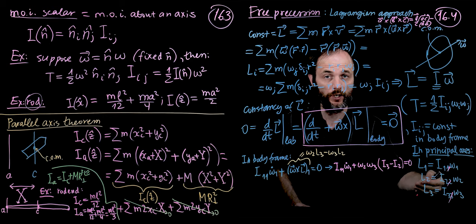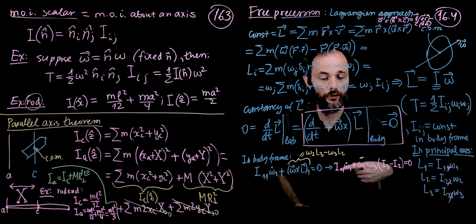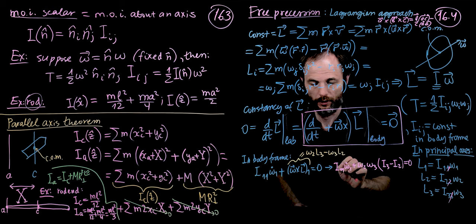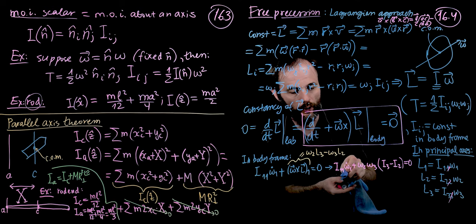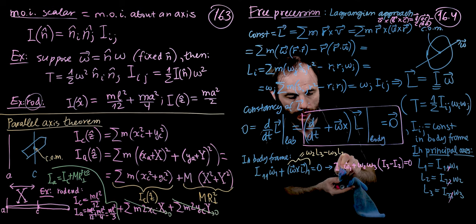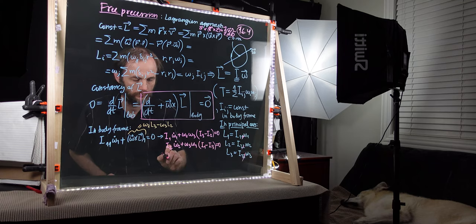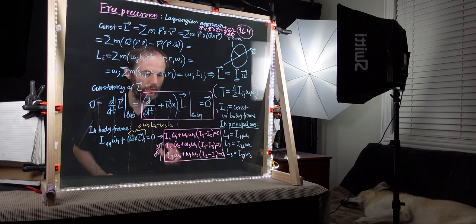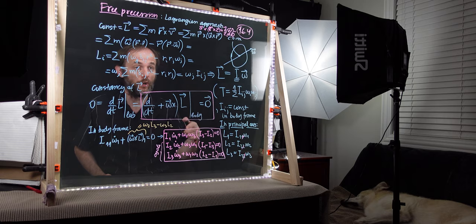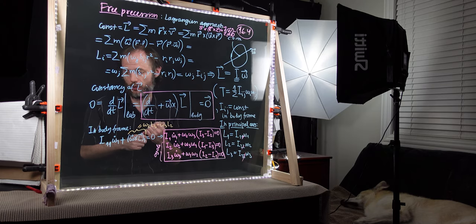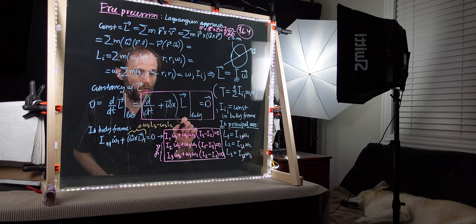We obtain the rest of the equations of motion by cycling through the indices: 1 becomes 2, 2 becomes 3, 3 becomes 1. These three equations for three unknowns are nothing but Euler's equations. We have three equations for three unknowns, which means we can solve for the omegas in the body frame.